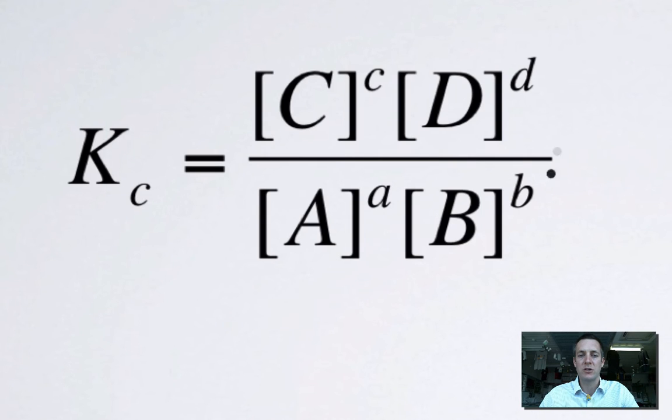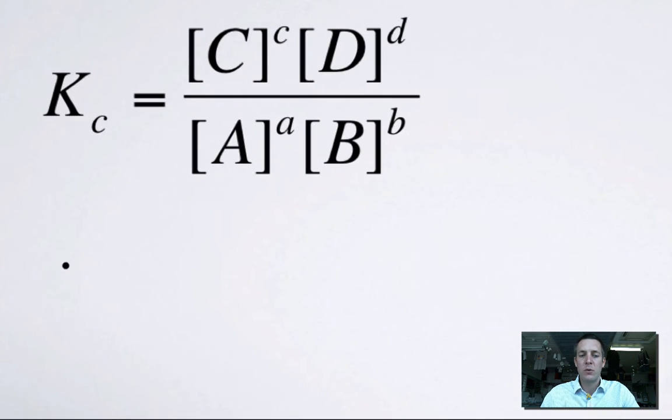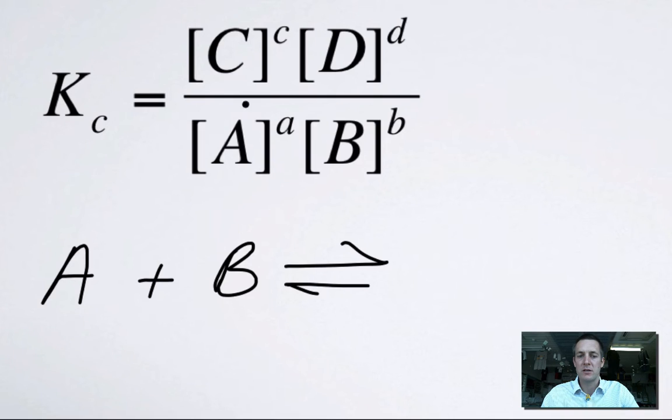So in our expression, we had the concentrations of our products on top, our reactants on the bottom, and the equation that might have given us this equilibrium constant would have looked like the reactants, A and B, reacting together to form the products, C and D.